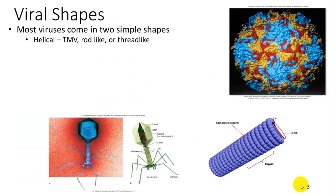One of the ways most things are first classified is through their structural appearance. Most viruses come in two simple shapes: either helical, or this 12-sided icosahedral ball — it looks like a ball, but it actually has many sides to it.